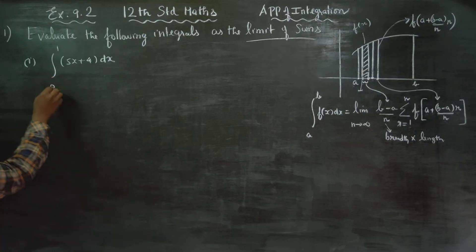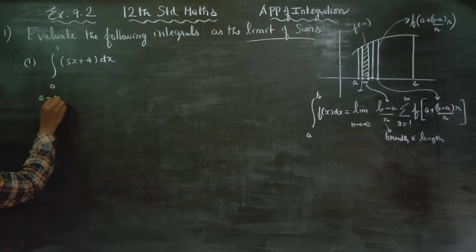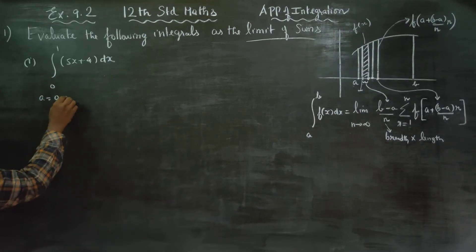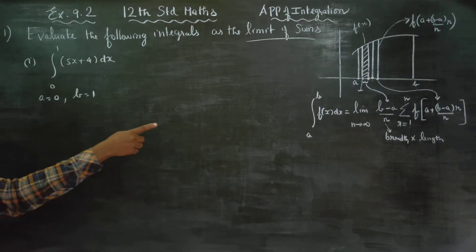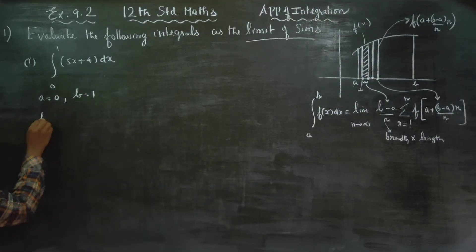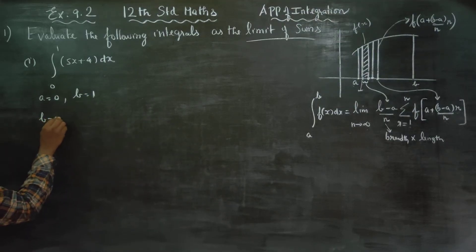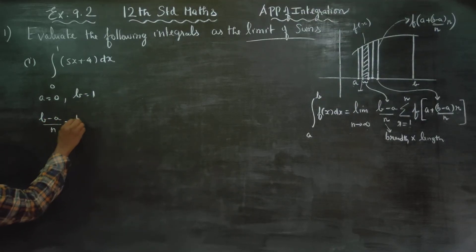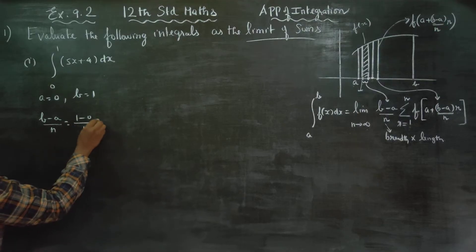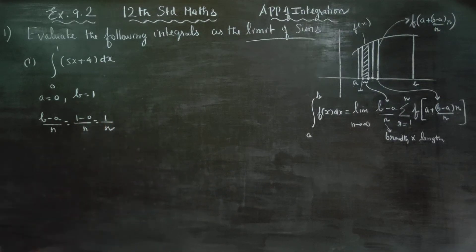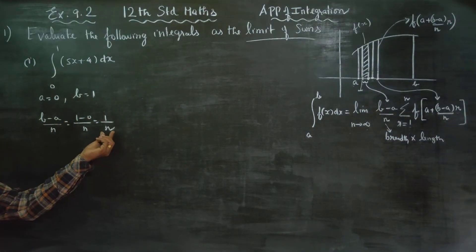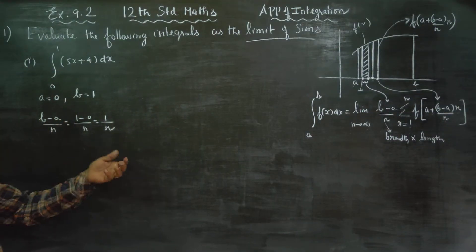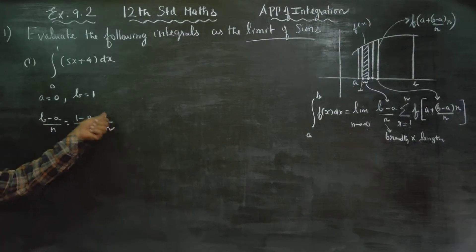Coming back to my sum: what is a? a is 0. What is b? b is 1. Then b minus a by n equals 1 minus 0 by n, which equals 1 by n. This is the breadth of each rectangle.